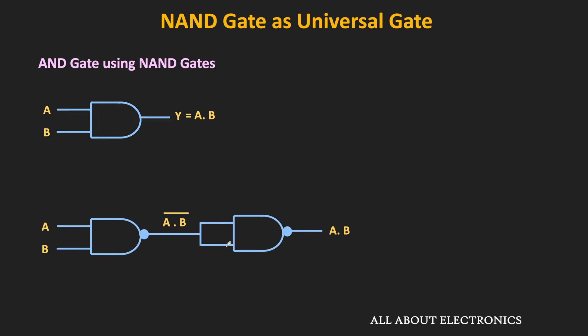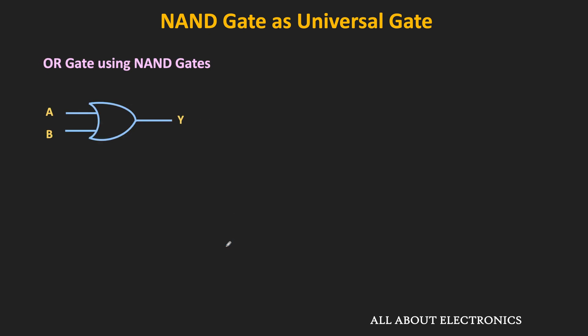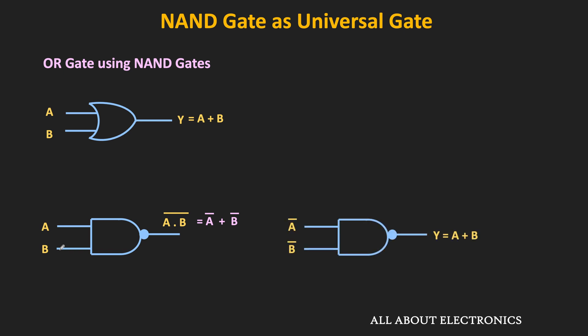Similarly, let us see how to implement the OR gate using the NAND gate. We know that if A and B are the input to the OR gate, then its output is equal to A plus B. On the other hand, the output of the NAND gate is equal to A·B whole bar. Now using De Morgan's Law, this can equivalently be written as A bar plus B bar — just break the bar and give it to the individual variable, and at the same time change the sign. That means A·B whole bar is equivalent to A bar plus B bar. Now instead of A and B, if we apply A bar and B bar as inputs to this NAND gate, then its output will be equal to A double bar plus B double bar, which is equivalent to A plus B.